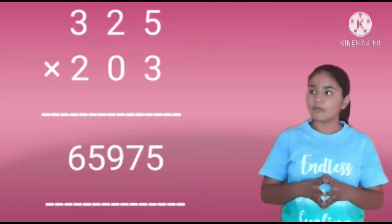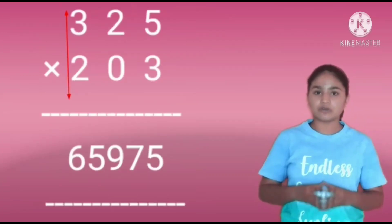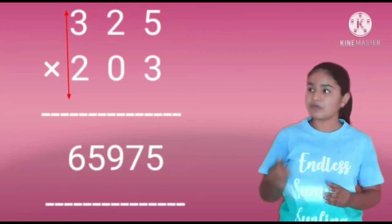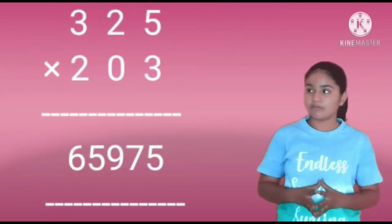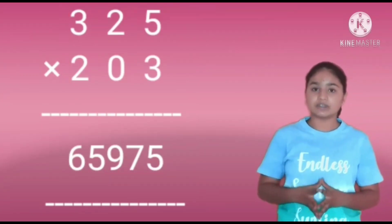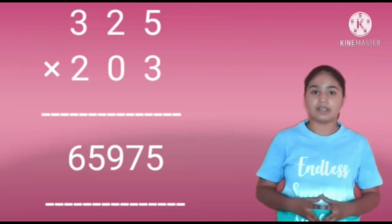Next, we have to do the last digit multiplication. That is 3 into 2 equals 6. Write the 6 before the number 5. So, our answer will be 65,975.